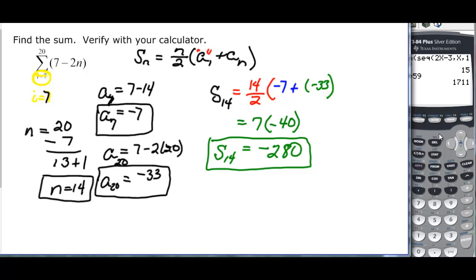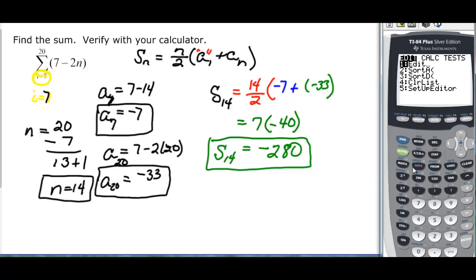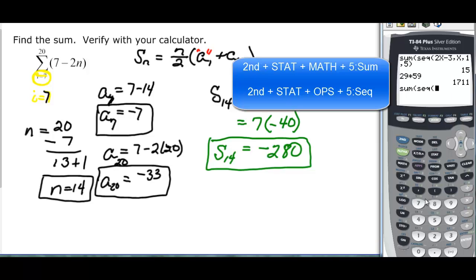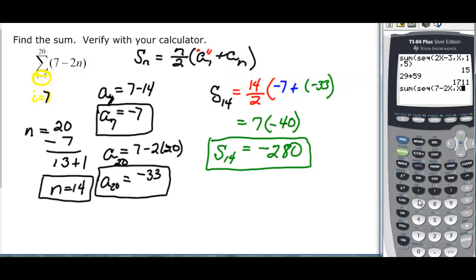Well, it asks us to verify with our calculator, so we get to use our wonderful technology again. We do second, stat, and then we do math first, and then second, stat over to ops, the sequence now. And our sequence is 7 minus 2x, and then comma, the variable we use is x, and then comma, we're starting with the 7th term and we're ending with the 20th term. You tell it which terms you want to use.